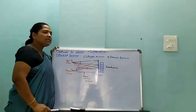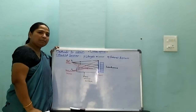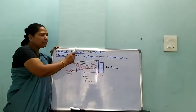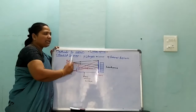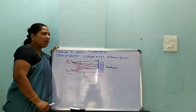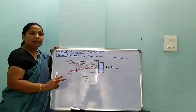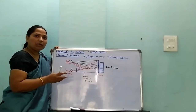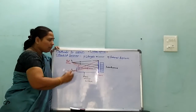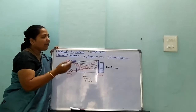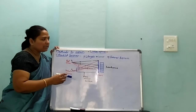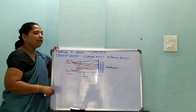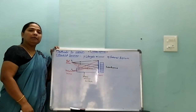The second method is the Fresnel biprism experiment. In the Fresnel biprism experiment, a biprism is formed when two prisms have their bases connected with each other. The refracting angle of the two prisms is about 180 degrees — their refracting angle is 180 degrees.